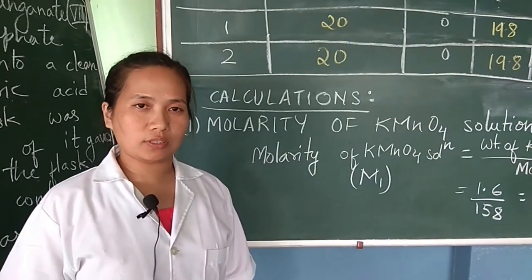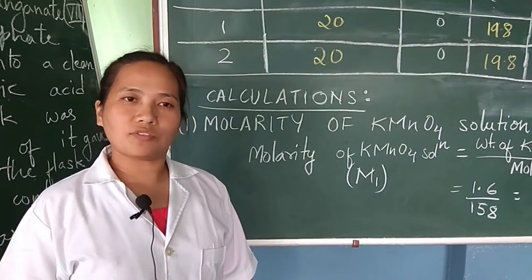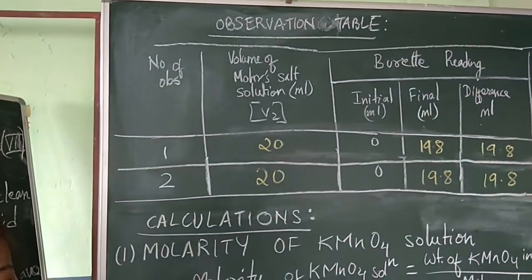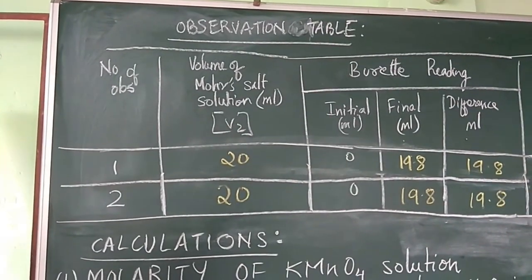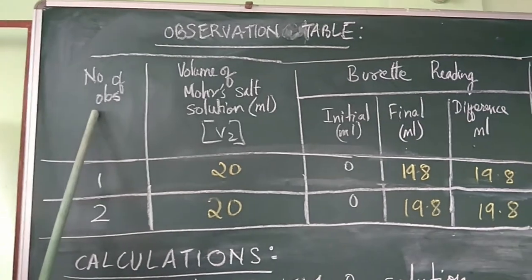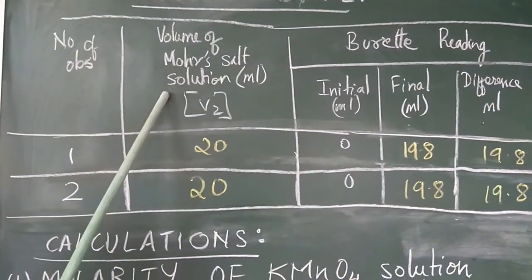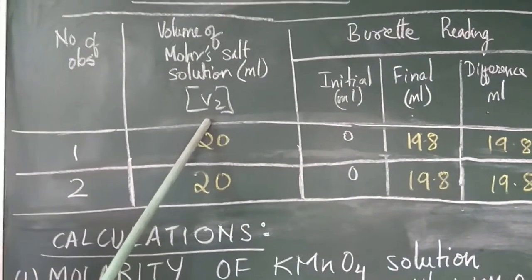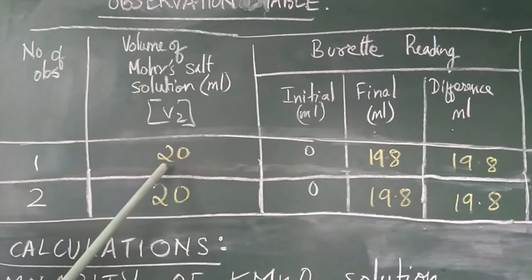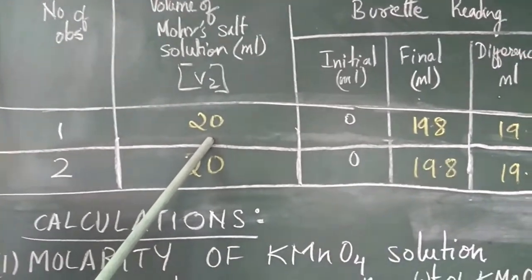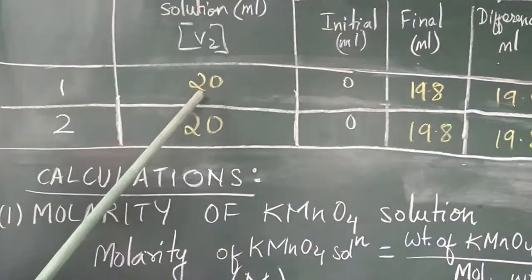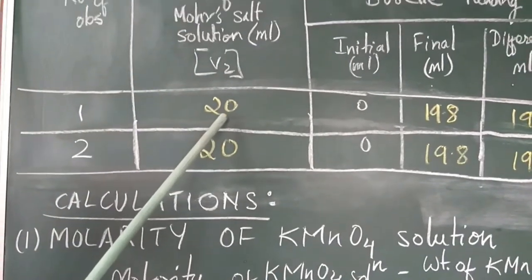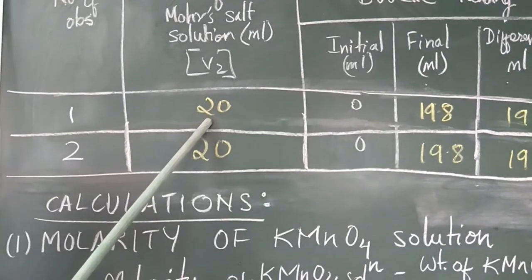Now we will make an observation table, where we write: number of observation, volume of Mohr's salt solution in ml (denoted V2, which is 20 ml since the pipette capacity was 20 ml). The volume of Mohr's salt is 20 ml for our experiment.